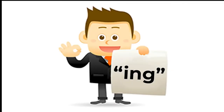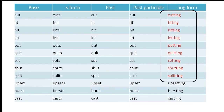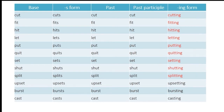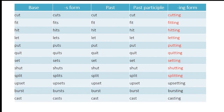You'll also notice something interesting about the ing form for these verbs. You'll notice that most of these end with the letter T or the T sound. And because of the short vowel in these verbs, the final T is doubled before adding the ing. The only ones that are different are the two at the bottom — burst and cast — because there's already a consonant before the final T, so we don't need to double it.